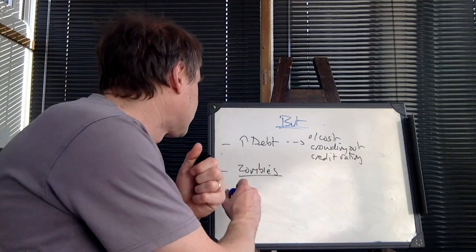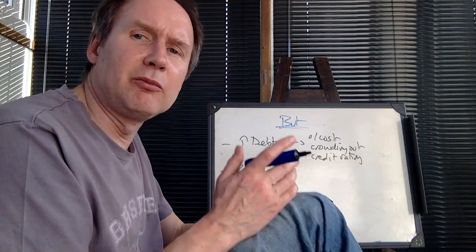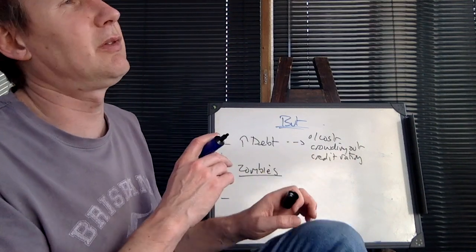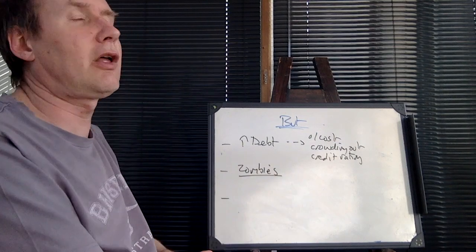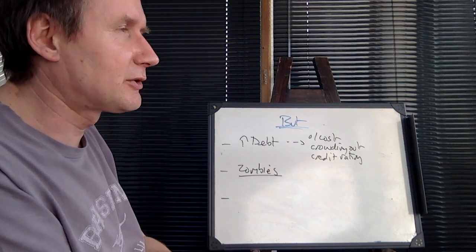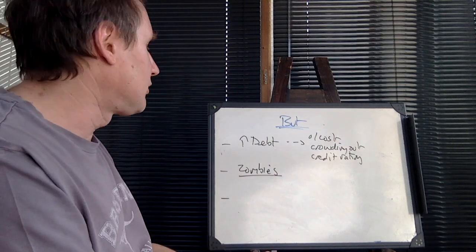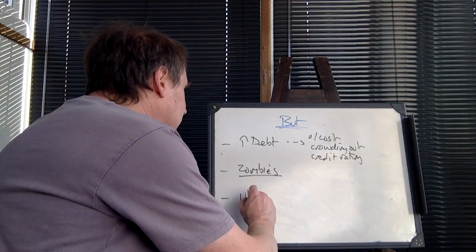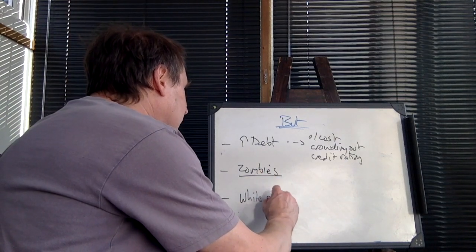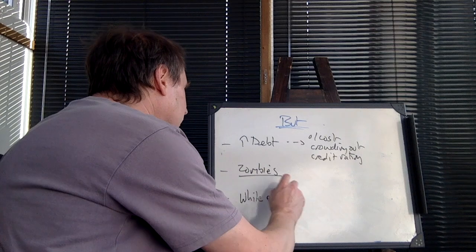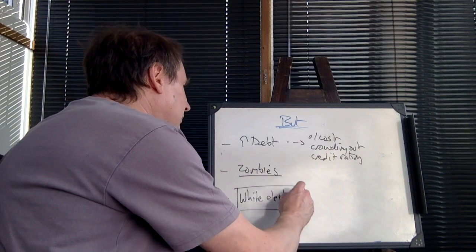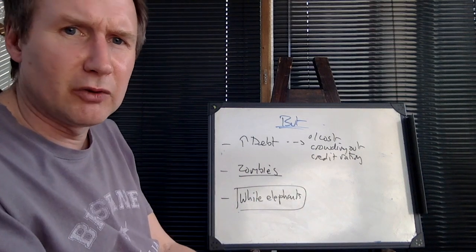And there are also worries that, in the case of some economists, like Japan, what you've also got is these ideas of white elephant projects, where the government, in other words, where basically you're spending a hell of a lot of money, but you're not really getting very much back.